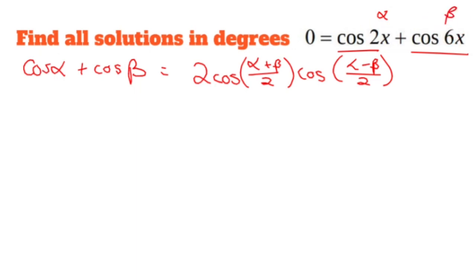So if I make believe that 2x is alpha and that 6x is beta, I can say that 0 equals 2 times cosine of alpha plus beta, 2x plus 6x, so 8x over 2. I'll simplify that in the middle, or in a minute, or in the middle. You'll know why I said middle. Cosine of alpha minus beta is negative 4x over 2.